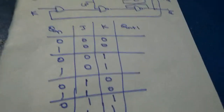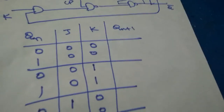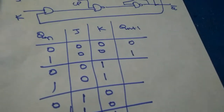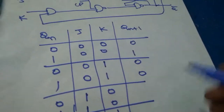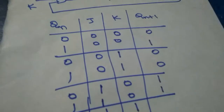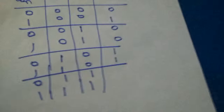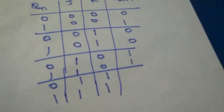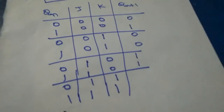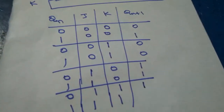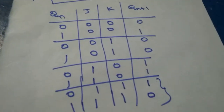For J=0 and K=0, whatever is in the present state will remain in the next state. For J=0 and K=1, the next state will be 0. For J=1 and K=0, the next state will be 1. Up to here the truth table is similar to the SR flip-flop. The change occurs at J=1, K=1 — the complement of the present state becomes the next state. The complement of 0 is 1, and the complement of 1 is 0. This is called the toggle condition.